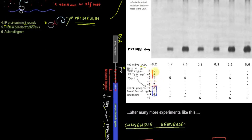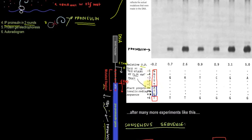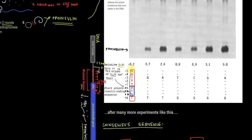One somewhat confusing thing: normally we talk about plus one as the start of transcription, but here the plus one position is the start of translation — this first ATG is plus one, plus two, plus three, plus four. Anything upstream from this plus one is negative: negative one, negative two, negative three, negative four, negative five, respectively. When reading the mutant table, a dot means that position is exactly the same as in mutant B38. If it's different, they note that — for example, in mutant 39, at the negative three position it's changed from T to G.